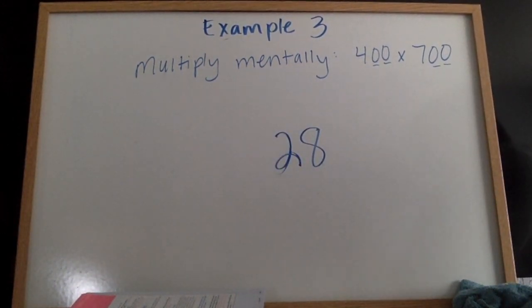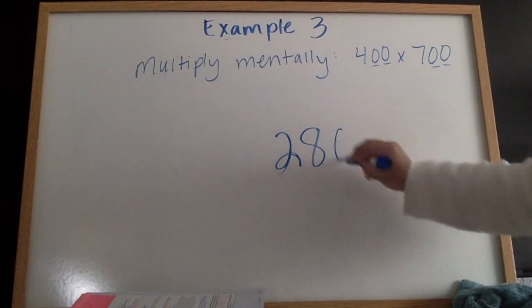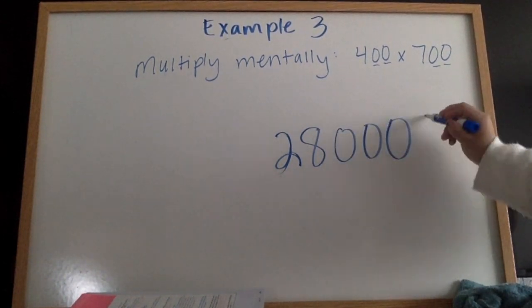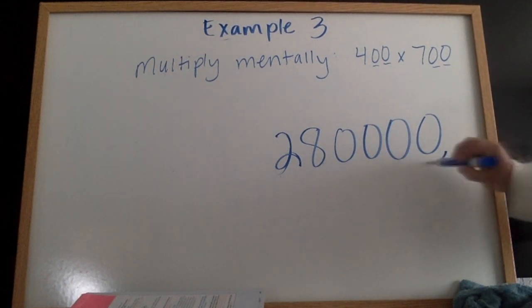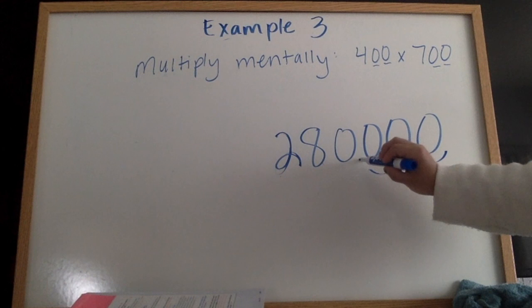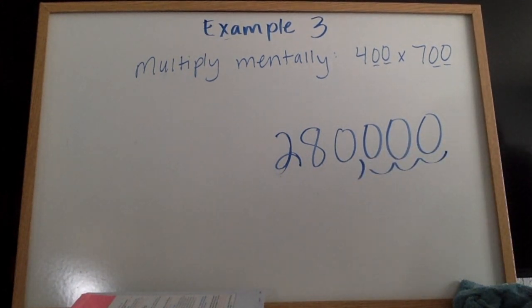Now I have four zeros I need to add into my product: one, two, three, four. So that's a big number. I'm going to count from the back three places. That's where my comma should go. If I answer this correctly, I should get 280,000.